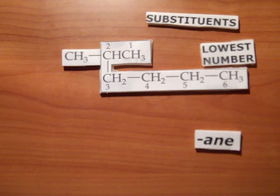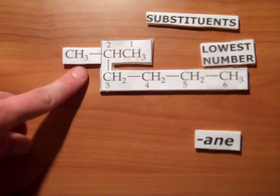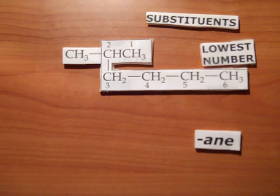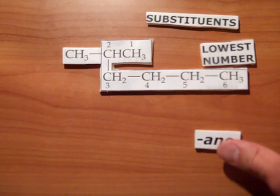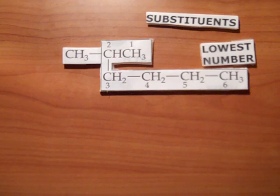Lastly, we must name the substituent group and its location. These groups are made by removing a hydrogen atom, as in here. We take away the -ane ending, and replace it with an -yl ending. Methane becomes methyl, ethane becomes ethyl, etc.